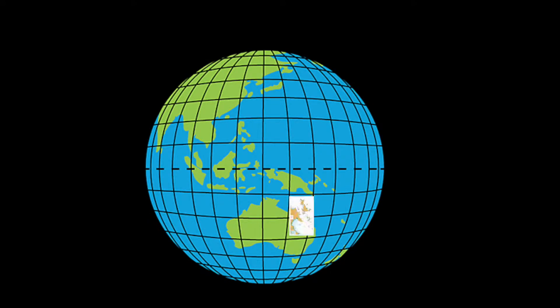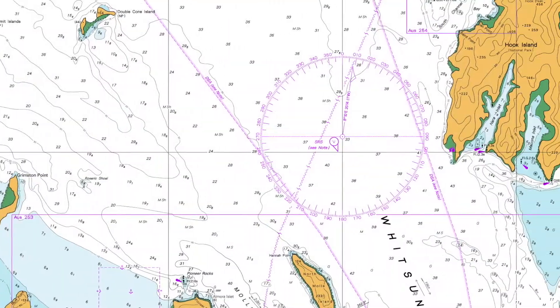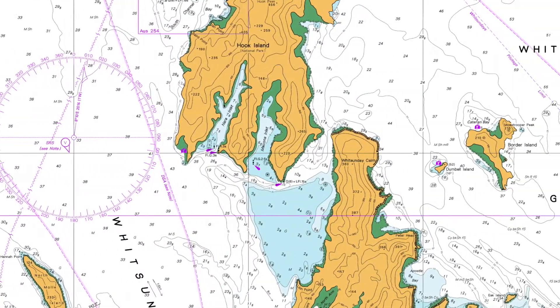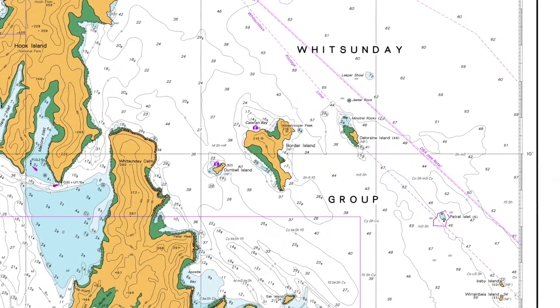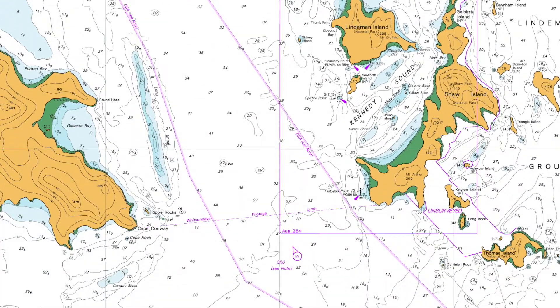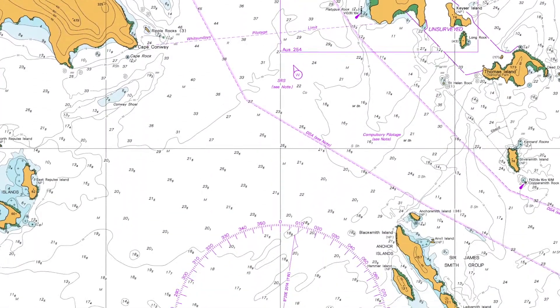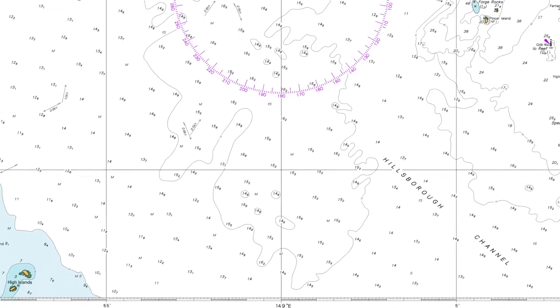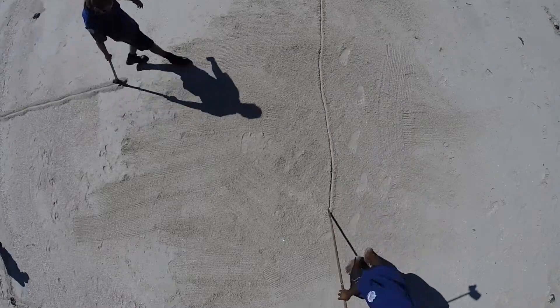Latitude and longitude make a grid across the earth, and a marine chart is a small piece of this grid. This is a line of latitude, and these are lines of longitude running up and down the chart. I've got to make those two lines cross to a point, and that gives me the position where I am. A point where latitude and longitude cross is a coordinate.